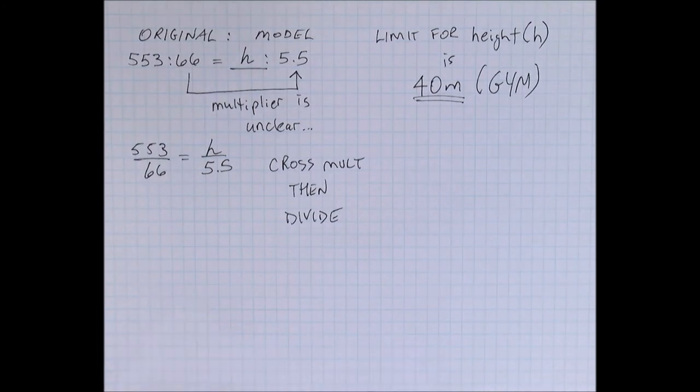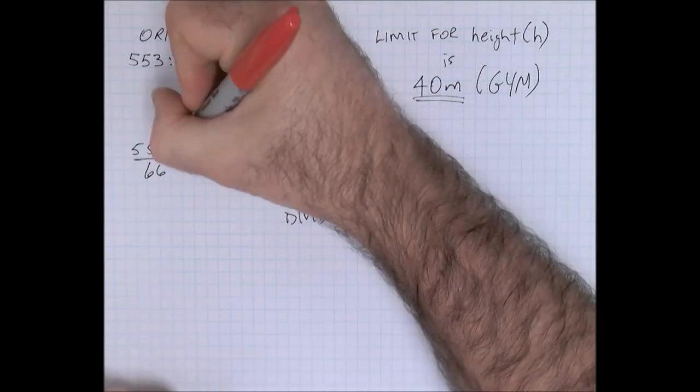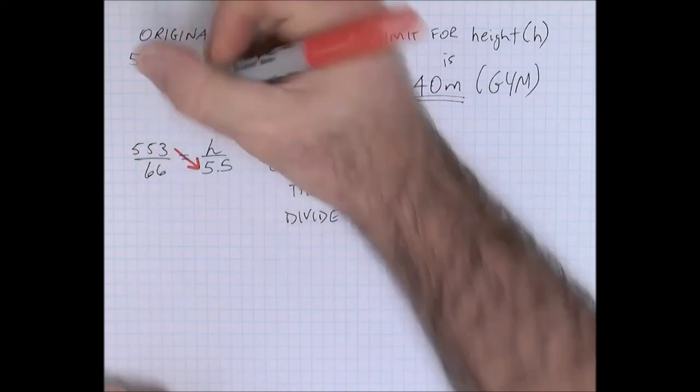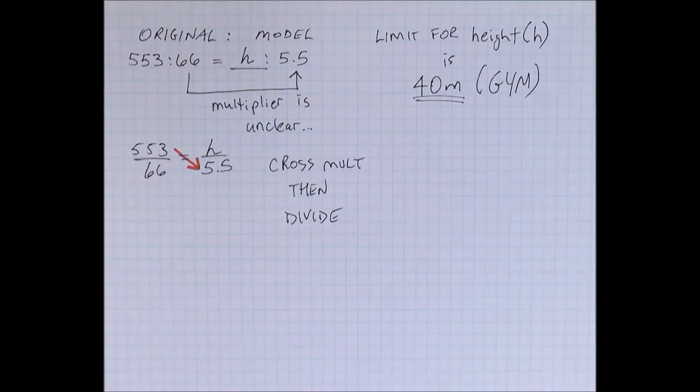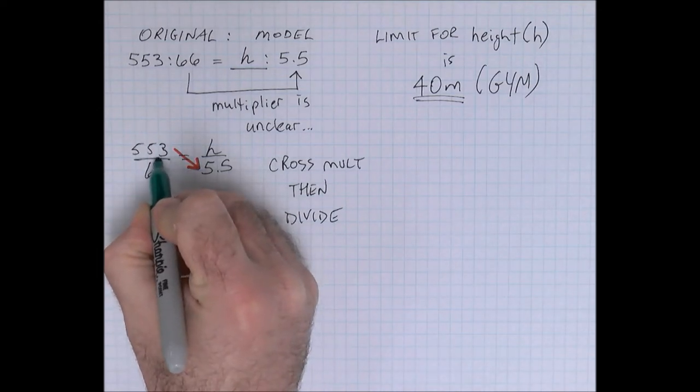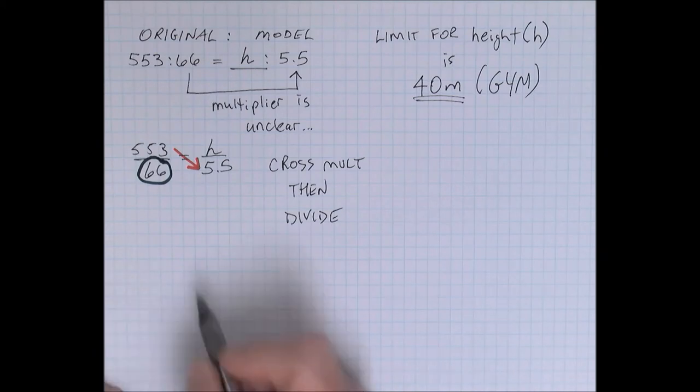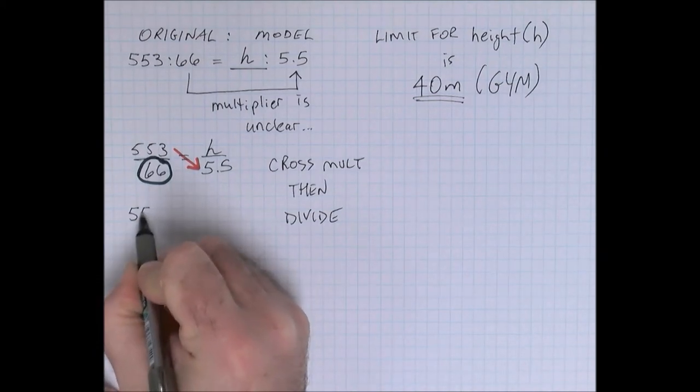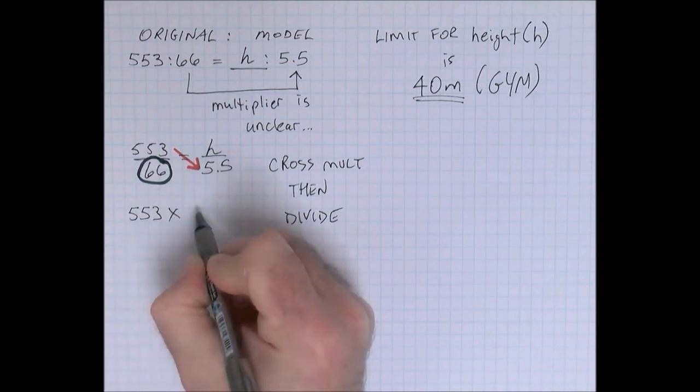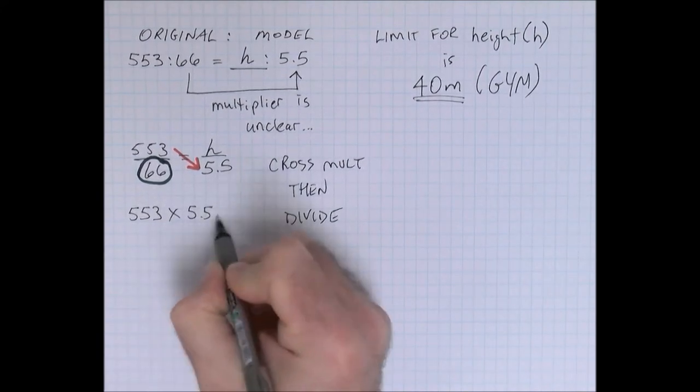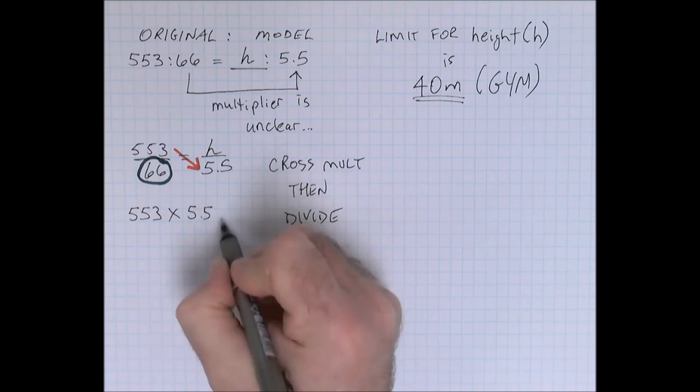Now we've used this strategy before. If we multiply across the equal sign from top to bottom in any direction, the properties will hold true. And then what we'll do is we'll take that answer and we'll divide by the other value in the proportion that we haven't used yet. So we'll start off taking 553 multiplied by 5.5, and